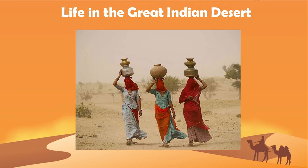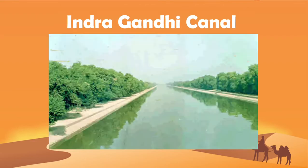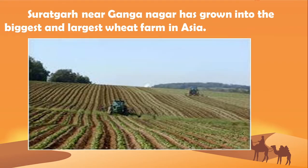People live near the oasis. Now the conditions in the Thar desert have improved. The Indira Gandhi Canal carries the water of river Sutlej and its tributaries into Rajasthan. Suratgarh near Ganga Nagar has grown into the biggest and largest wheat farm in Asia.